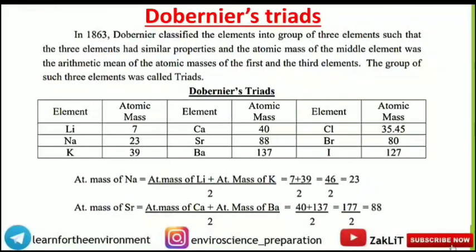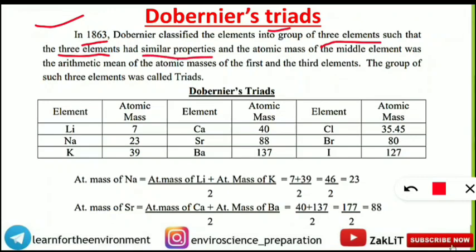There are 118 elements discovered so far, and we need to arrange them in groups so we can study their properties easily. Different scientists made different classification tables. The first is Dobereiner's Triads, proposed in 1863. He classified elements into groups of three, where the three elements had similar properties and the atomic mass of the middle element was the arithmetic mean of the atomic masses of the first and third elements.